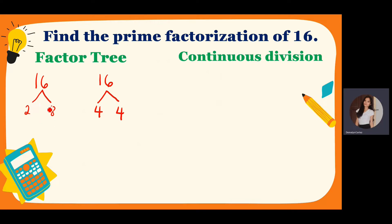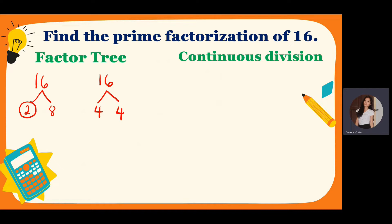So as you can see here, 2 and 8. 2 is a prime number, so let's encircle it. Quick review: when we say prime number, the factors are 1 and itself. So like 2 — factors of 2 are 1 and itself, 1 times 2. So that's why we encircle 2, because it's already a prime number — a prime factor. And then 8. 8 is a composite number, meaning it has two or more factors: 1 times 8, and 2 times 4. So let's use 2 times 4.